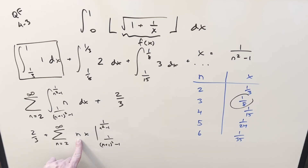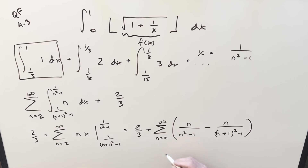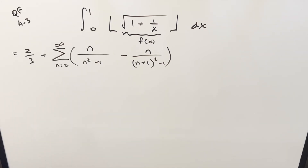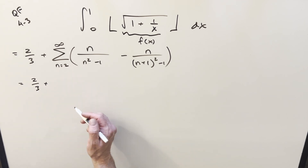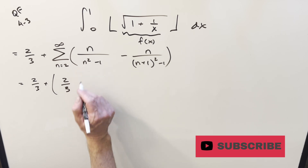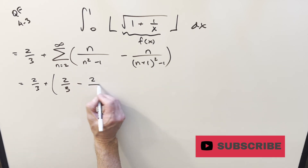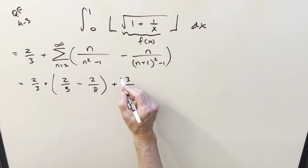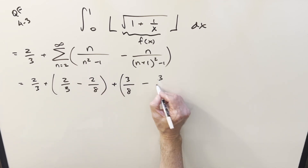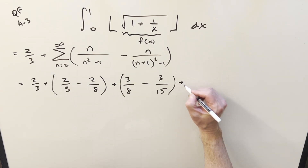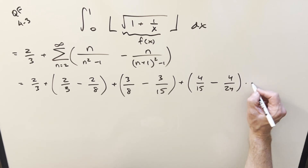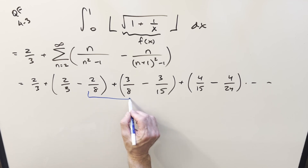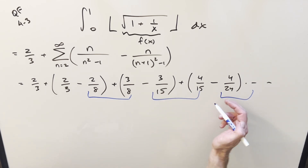Integrating the first piece — integrating 1 from 1 third to 1 — gives x evaluated from 1 third to 1, which is just 2 thirds. So we pull a 2 thirds out separately. For the general integral, integrating the constant n gives n times x evaluated from 1 over (n+1) squared minus 1 to 1 over n squared minus 1. Let's evaluate this and distribute in the n, then simplify the messy-looking sum.